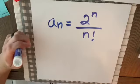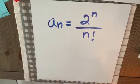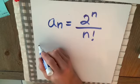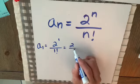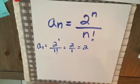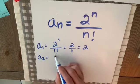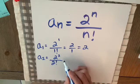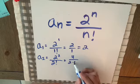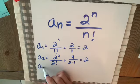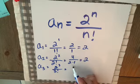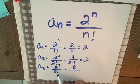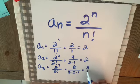What if we were asked to list the first five terms of the sequence defined by aₙ = 2ⁿ divided by n factorial? Well, a₁ would be 2 to the 1 over 1 factorial, which is 2 over 1, which is 2. a₂ is 2 squared over 2 factorial, which is 4 over 2, which is 2. a₃ is 2 to the third over 3 factorial, which is 8 over 6.